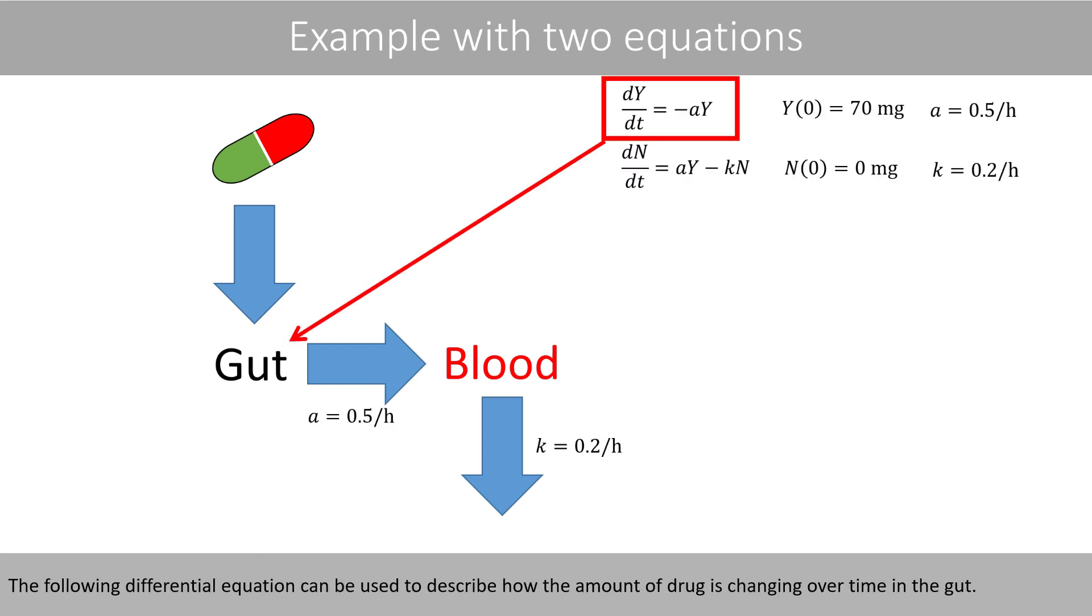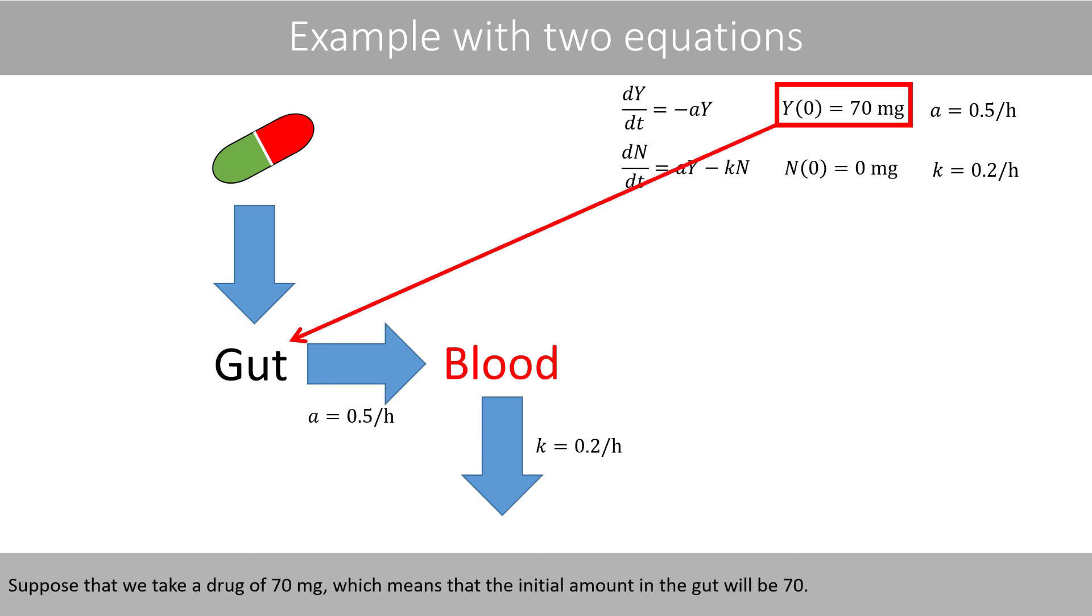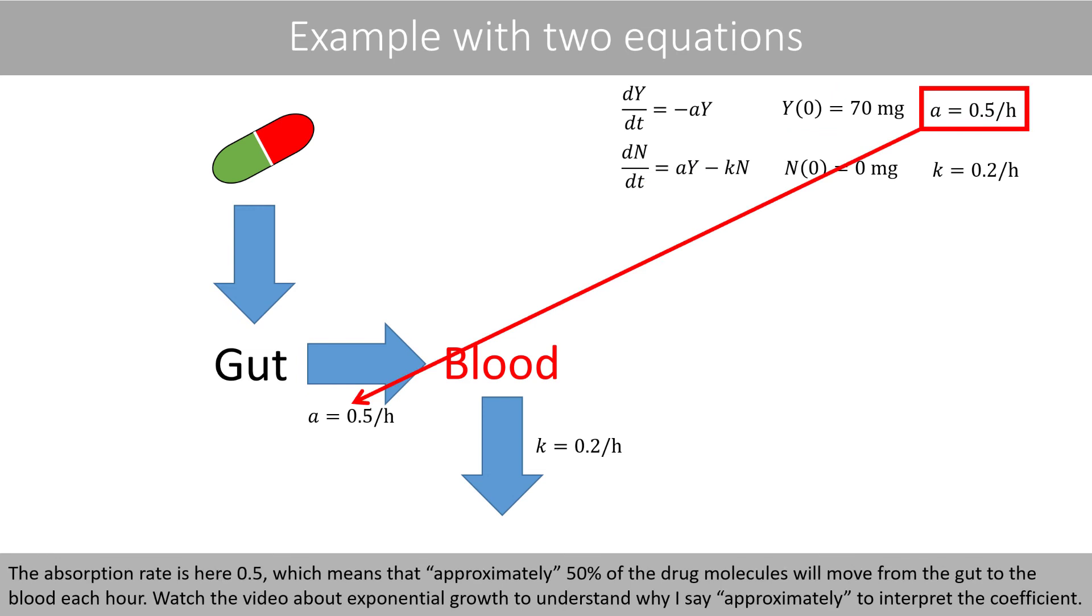The following differential equation can be used to describe how the amount of drug is changing over time in the gut. Suppose that we take a drug of 70 milligrams, which means that the initial amount in the gut will be 70. The absorption rate is here 0.5, which means that approximately 50% of the drug molecules will move from the gut to the blood every hour.